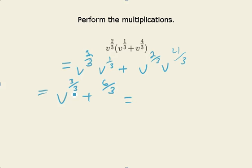Three over three, that's one, so this is just v to the first power. And six over three, that's two, so this is v-squared. So our solution is v plus v-squared.